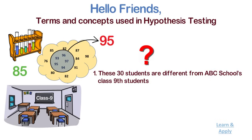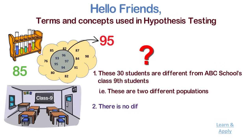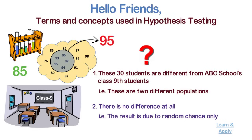That is, all ABC school class 9 students — in simple words, these are two different populations. And two, there is no difference at all. The result is due to random chance only. That is, we found the average value of 85; it could have been higher or lower than 85, since there are students having average scores less or more than 85.